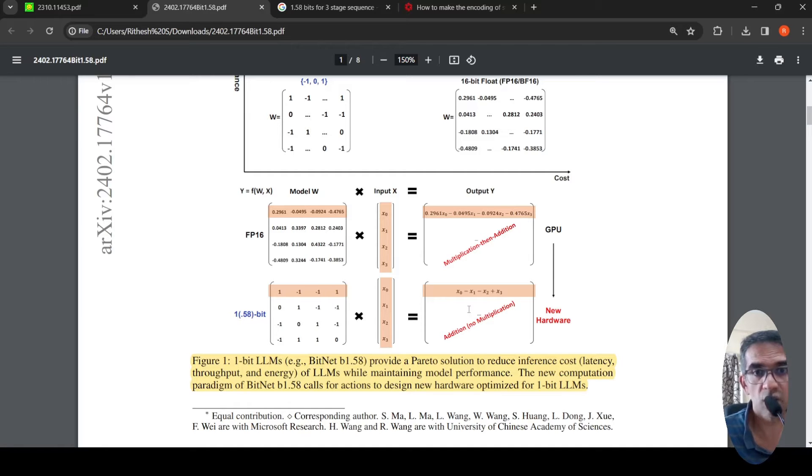So what they are saying is that one bit large language models, this particular BitNet B1.58, they provide a Pareto solution to reduce inference cost, basically, latency, throughput and energy of LLMs while maintaining the model performance.